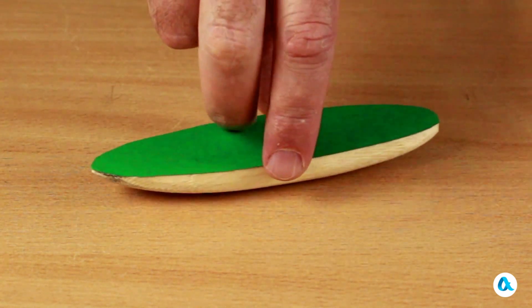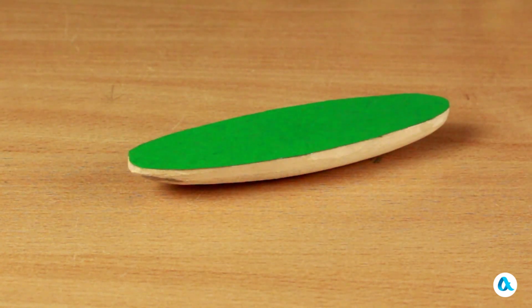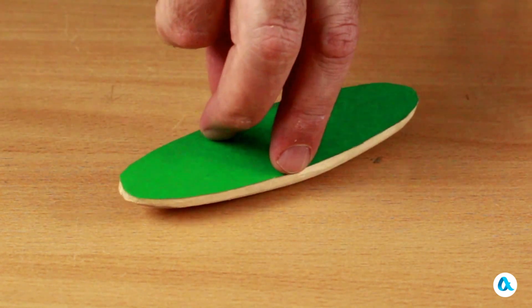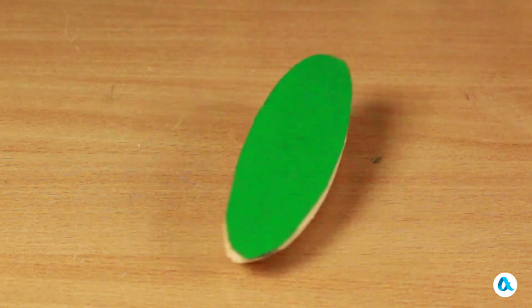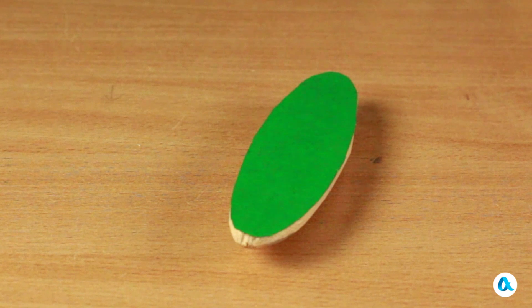However, when I make an attempt to spin it in a clockwise direction, it starts knocking, rocking, and makes a partial turn back in its rotation. Let us give it another try. We are witnessing the exact same movement. There is a rattle, and then it starts to move back.